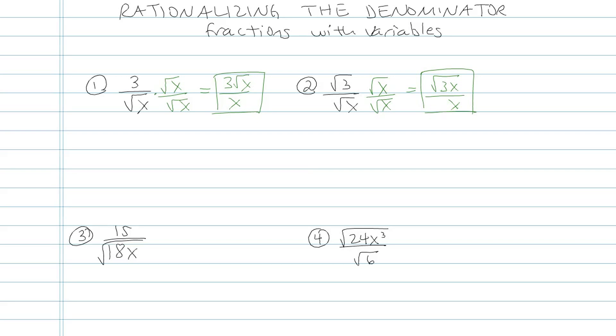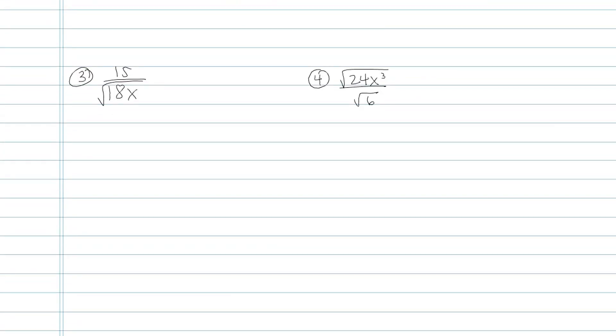Let's try some where there's integer radicals that can be simplified further. 15 over square root of 18x. Well, square root of 18x can be simplified as square root of 9 times square root of 2 times square root of x. And square root of 9, of course, is just regular 3. So I have 15 over regular 3 and then root 2x.